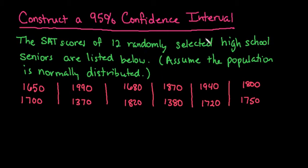For this video, we are going to construct a 95% confidence interval for high school seniors SAT test scores. The SAT scores of 12 randomly selected high school seniors are listed below, and we are told to assume the population is normally distributed.